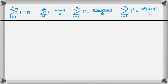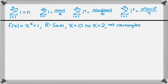So here's the problem we want to do. We have f of x equals x squared plus 1. We want to do a right Riemann sum. A right Riemann sum starts at i equals 1, whereas a left Riemann sum starts at i equals 0. All the formulas we know start at i equals 1, so it makes sense to do a right Riemann sum. I'm going to go from x equals 0 to x equals 2 and use an infinite number of rectangles, which should give the exact value.